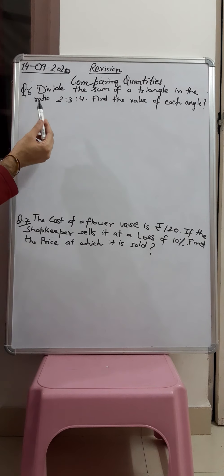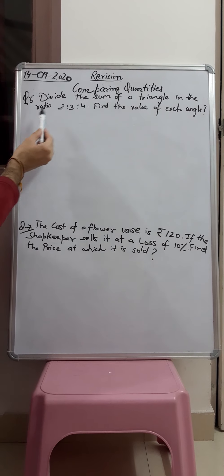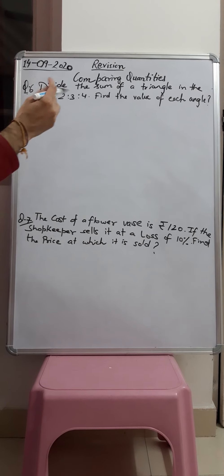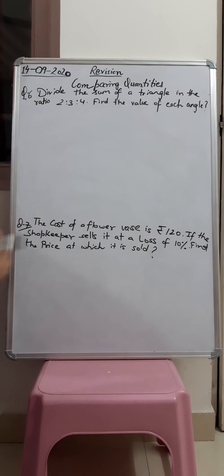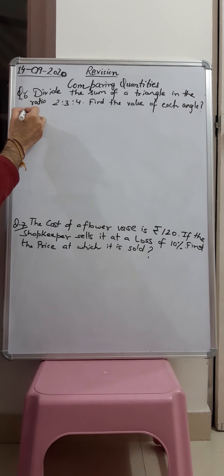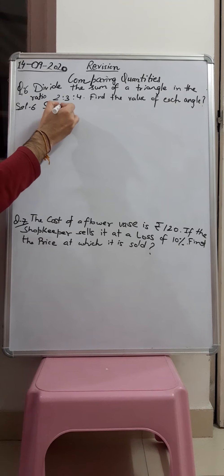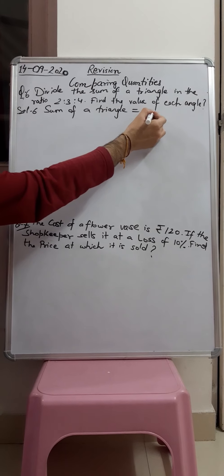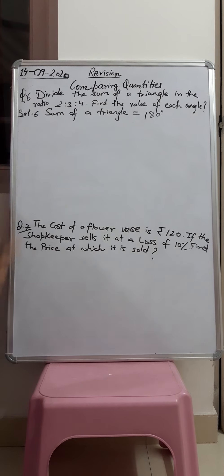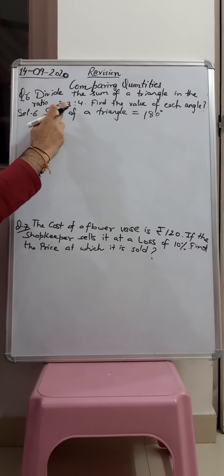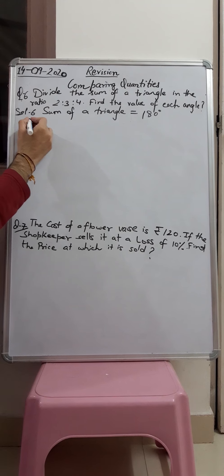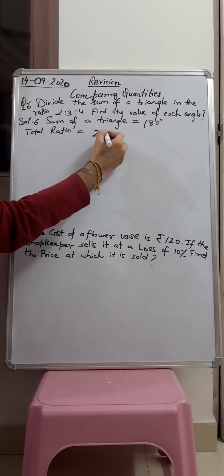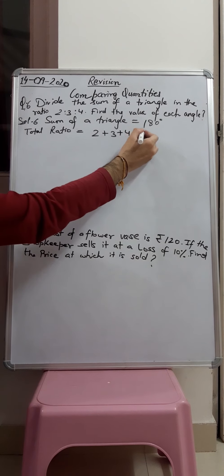Question number 6: divide the sum of angles of a triangle in the ratio 2 ratio 3 ratio 4 and find the value of each angle. We know the sum of angles of a triangle is always 180 degrees. The ratio given is 2 ratio 3 ratio 4. First find the total ratio: 2 plus 3 plus 4 equals 9. So total ratio is 9.